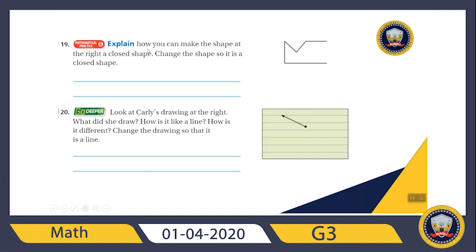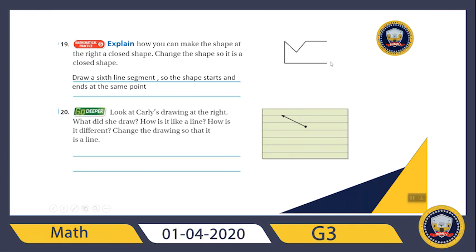Number 19: explain how you can make the shape at the right a closed shape. How can we make it a closed shape? If we draw six line segments so the shape starts and ends at the same point — it starts here, goes here, and ends here — but if we draw a line here and a line here, it will be a closed shape. Currently it has one, two, three, four, five line segments.